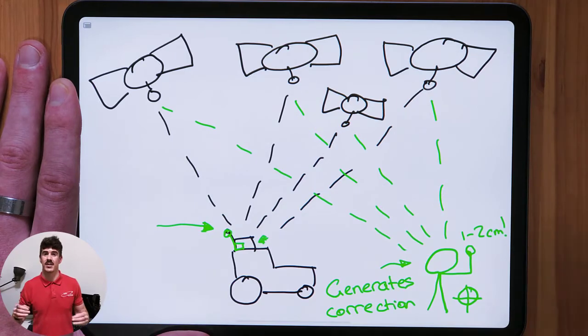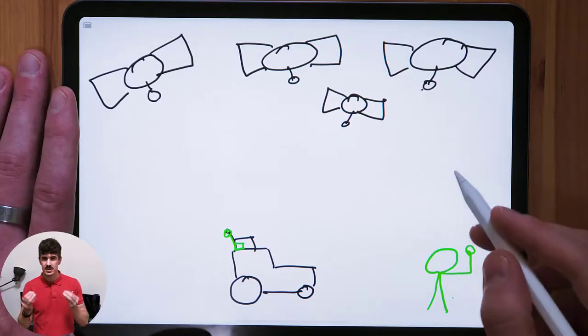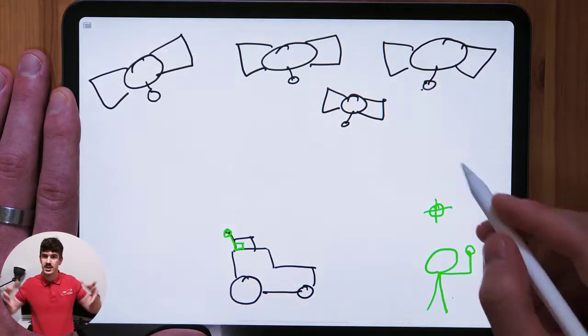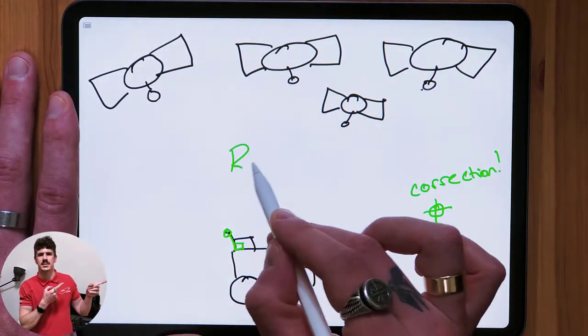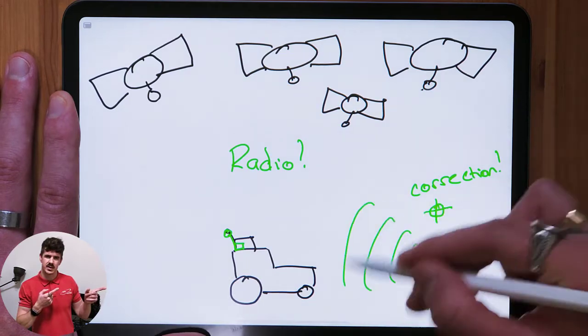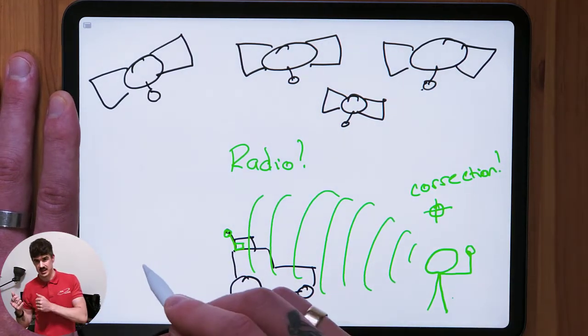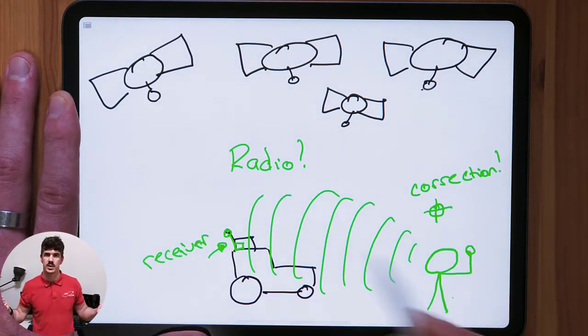That allows it to generate its error correction, much like the reference stations in the satellite-based error correction method. So we have the base station generating its error correction because it's in a fixed location. We need to get it to our machine. With satellite-based error correction, we use the geostationary satellites. Obviously, we don't have that option with RTK.